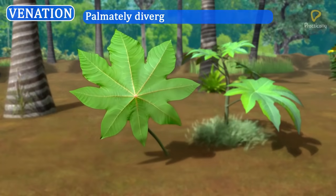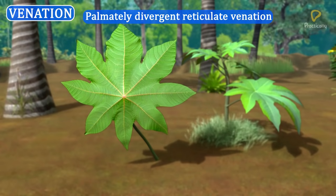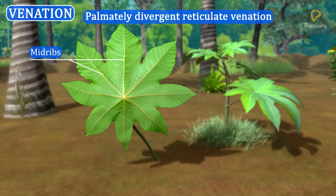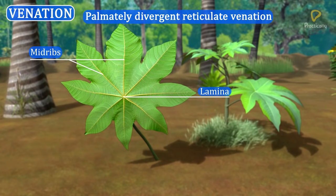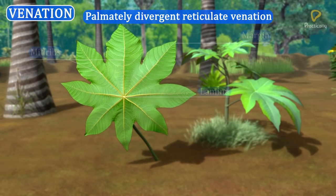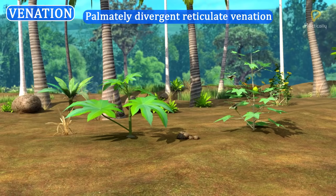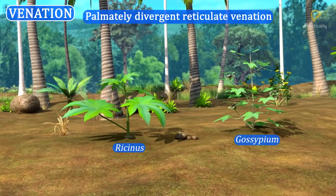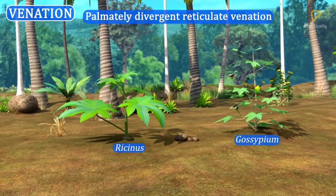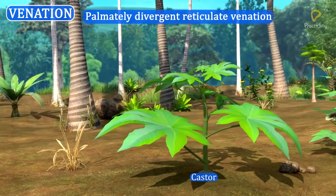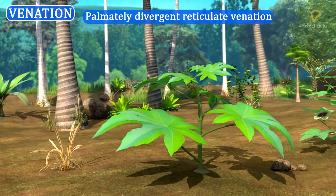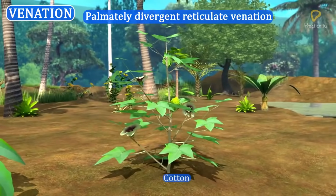Palmately divergent reticulate venation: In this venation, many mid-ribs arise from the base of the lamina and diverge from one another towards the margins of the leaf blade. This venation is seen in Ricinus and Gossypium. Ricinus is the generic name of castor, and Gossypium is the generic name of cotton.